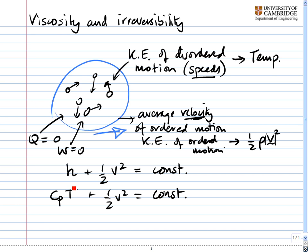And let's look at what these terms are. CₚT here is essentially the kinetic energy of the disordered motion. Whereas, the half v squared here, by the way, that's per unit mass, is the kinetic energy of the ordered motion.